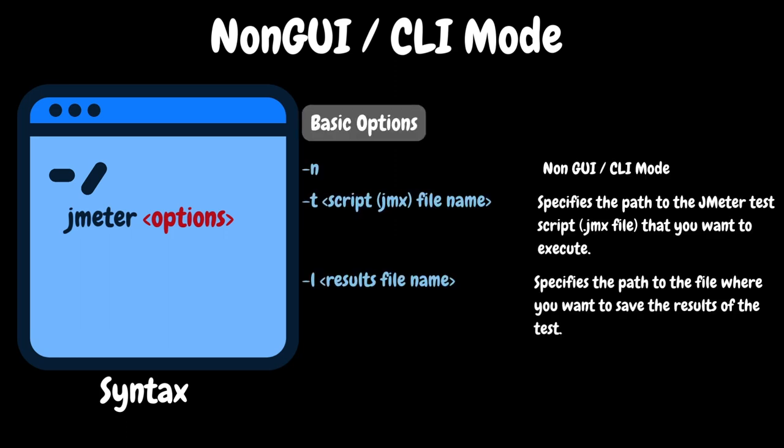When we specify -n, that means we are telling JMeter that this test should be executed in non-GUI or CLI mode — this option is mandatory. Next, we have -t, where we need to specify the actual JMeter script, that is the JMX file. If the script is stored in a different directory other than bin, we should specify the complete path. Then we have -l, where we specify the results file so that JMeter will write all the results into that file for analysis purposes.